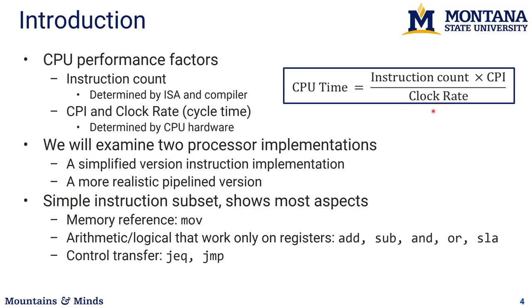If we can keep CPI the same but increase the clock rate, then the processor will get faster. We'll look at two different processor implementations: first a simplified version, and then a more realistic pipeline implementation. We'll start with a simple version to get the processor working at all, then try to optimize it using a pipeline.